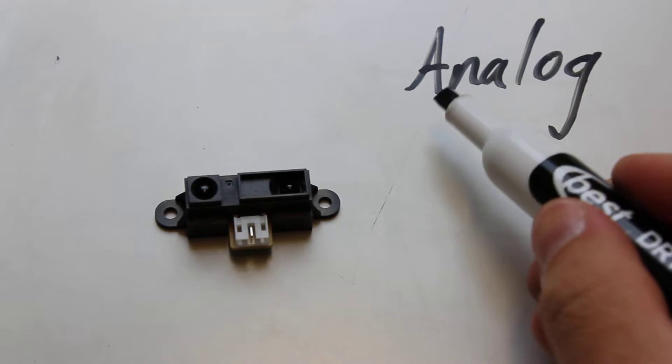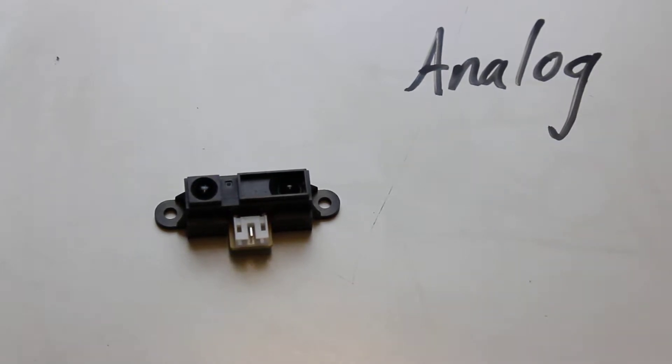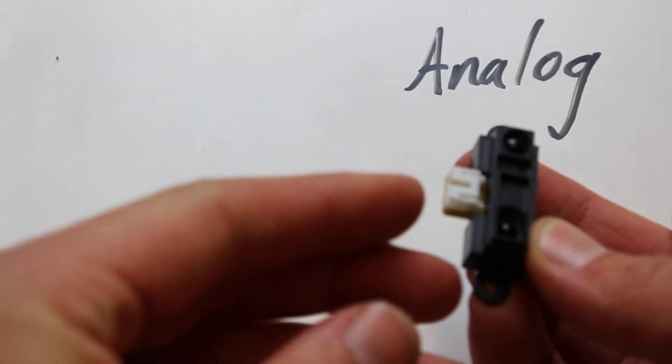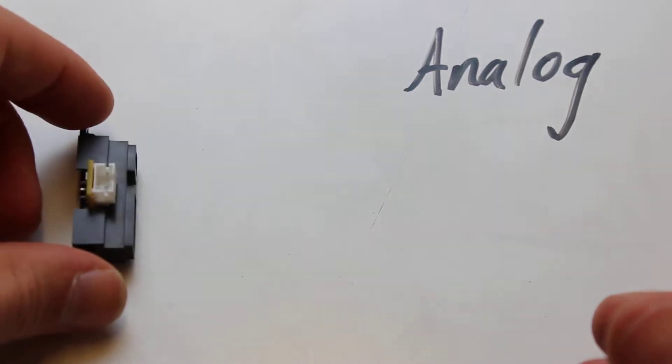When you're reading it, you have to have an analog pin to read it with an Arduino. The way these ultrasonic sensors work is you've got three pins on it: positive, negative, and the output analog signal.